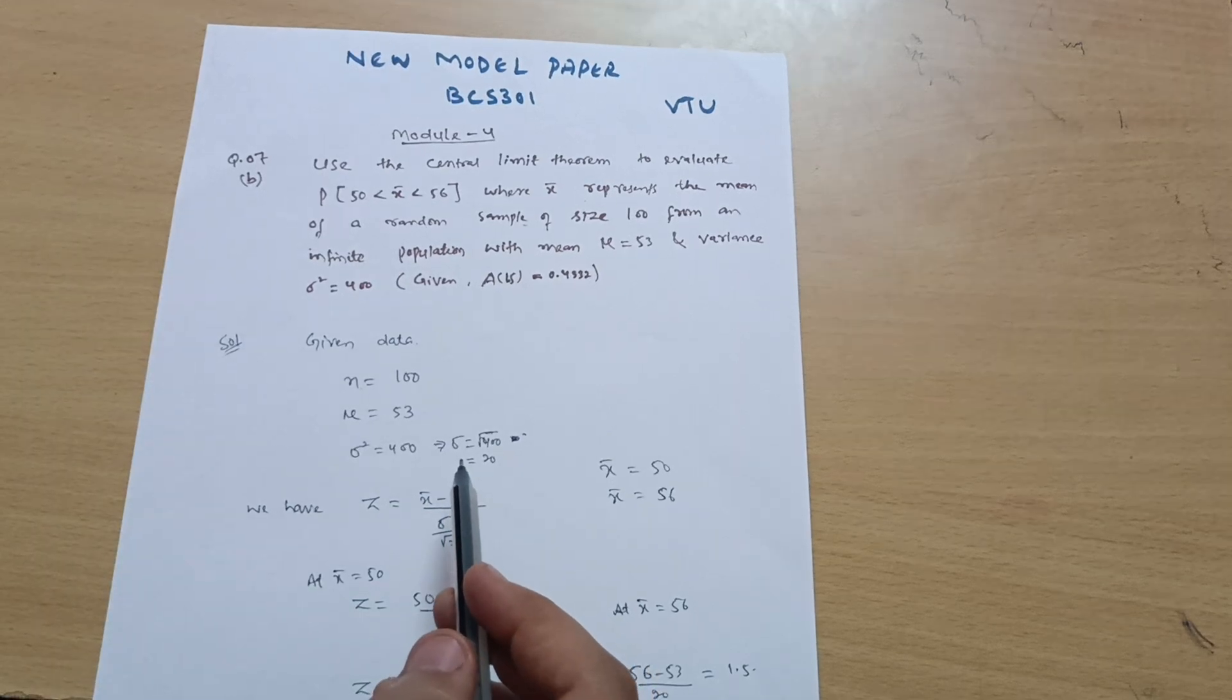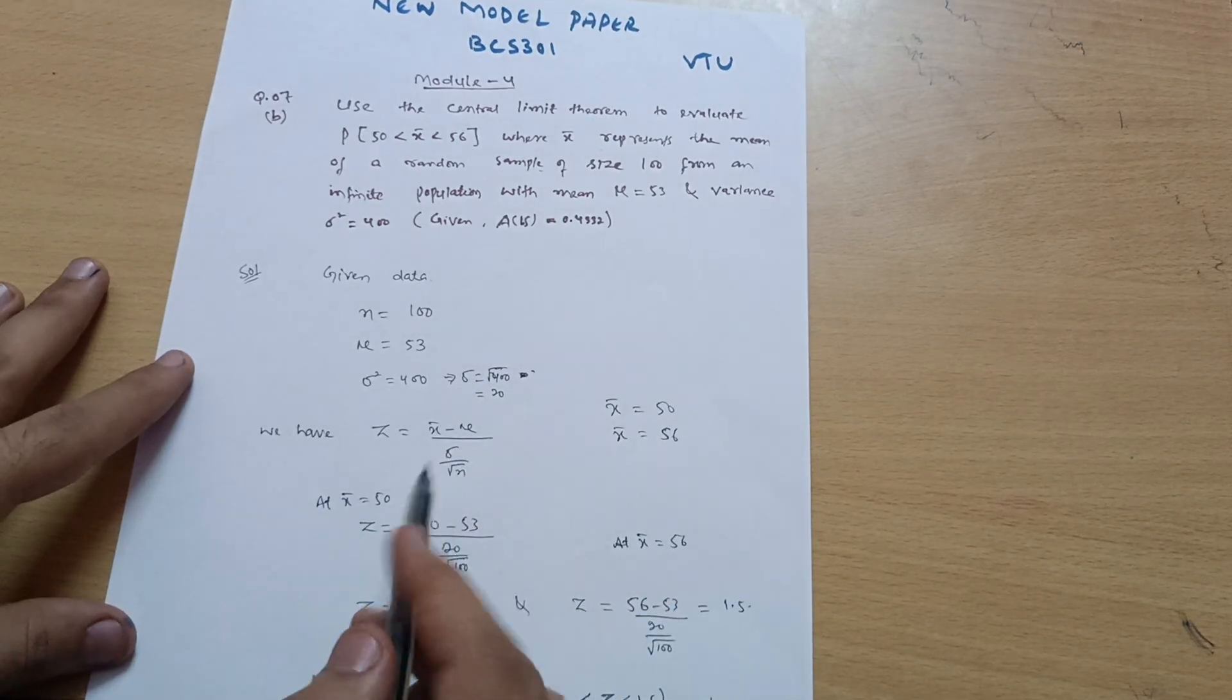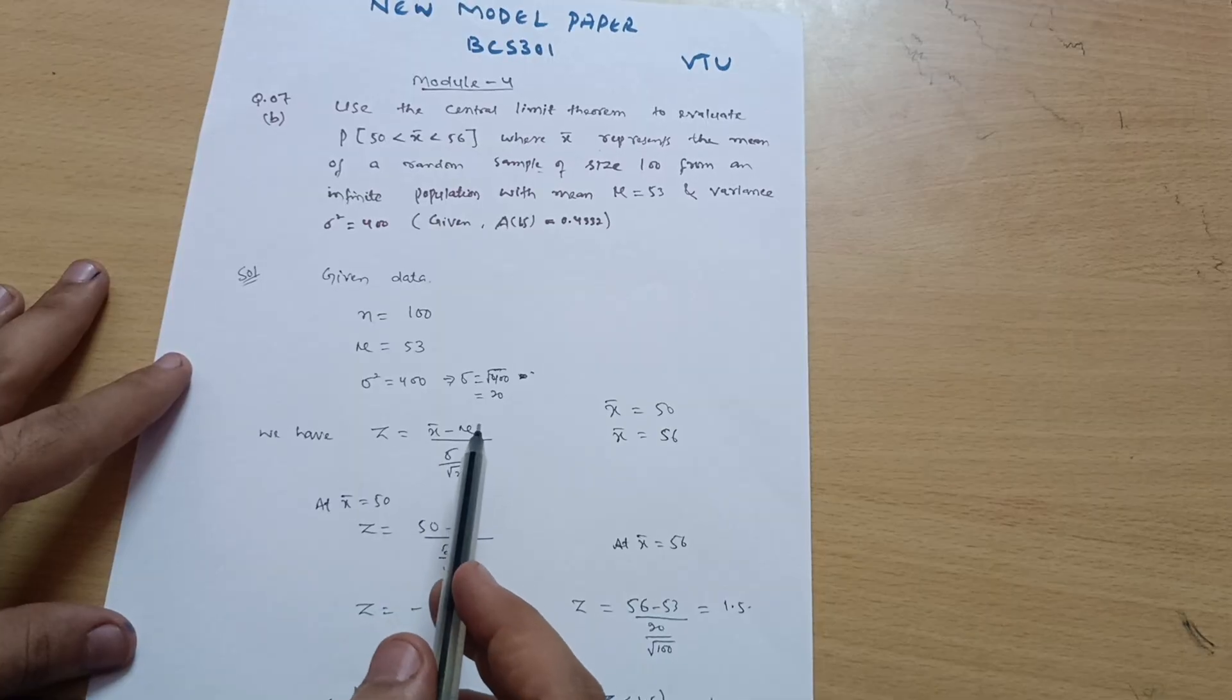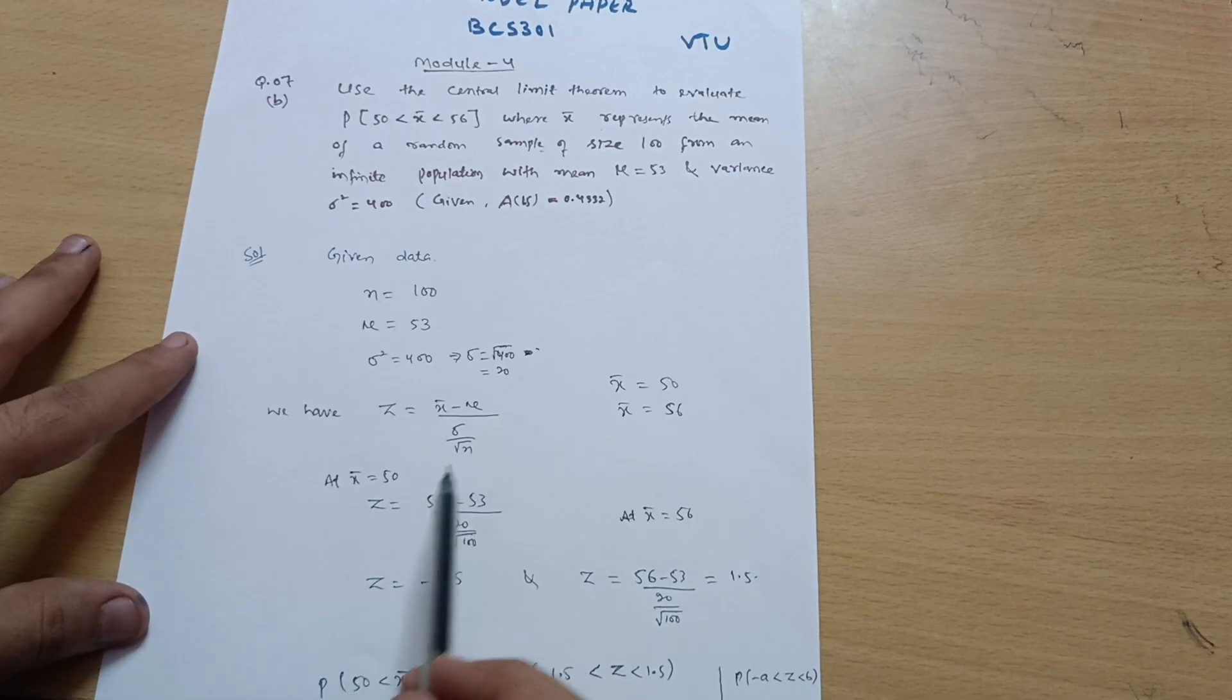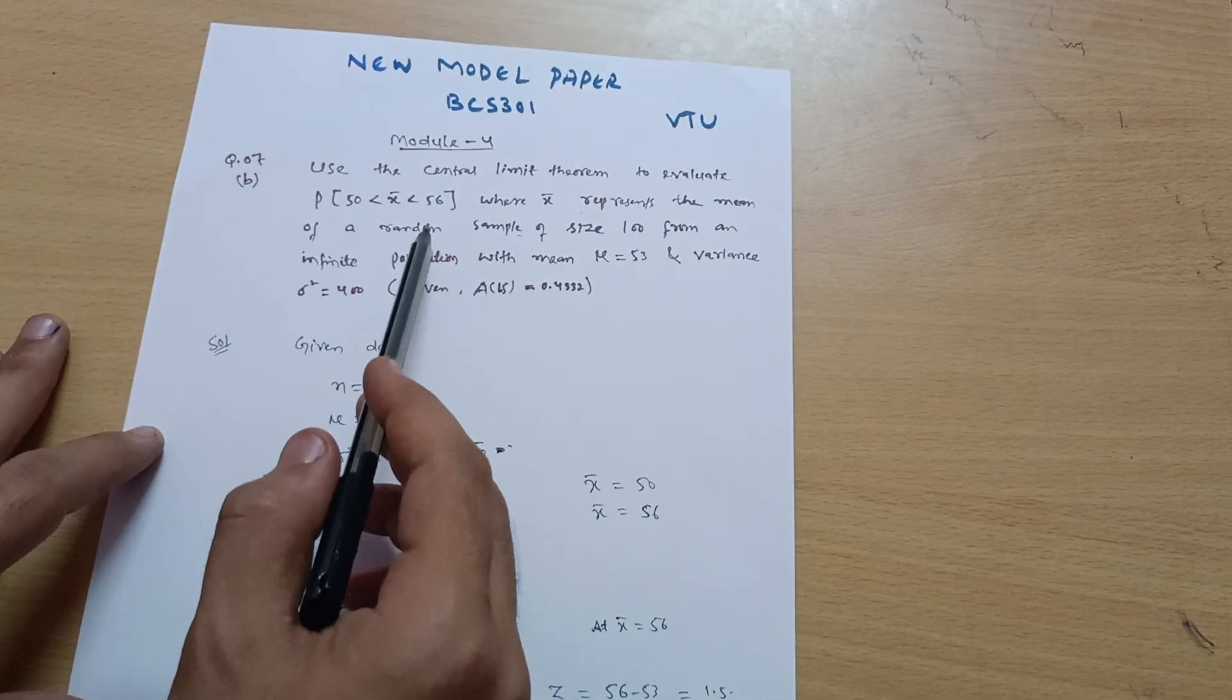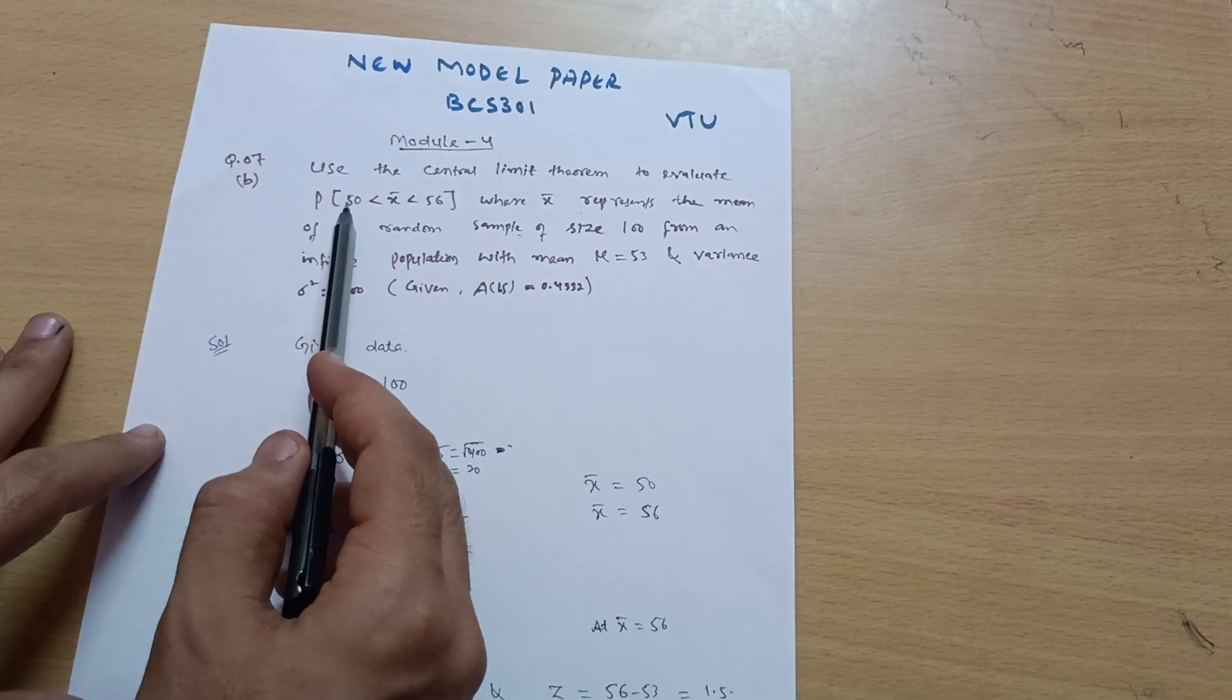You already know the formula as we have solved varieties of problems on central limit theorem. Z = (X̄ - μ)/(σ/√n). Try to write down the values. What is the X̄ value? First, take 50, then take 56.